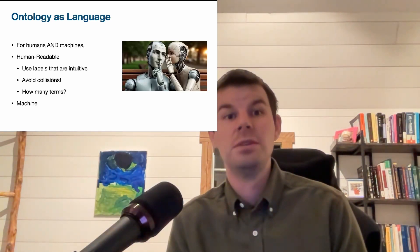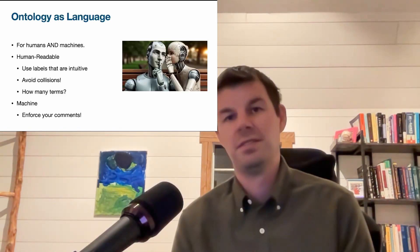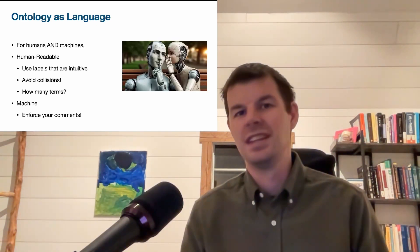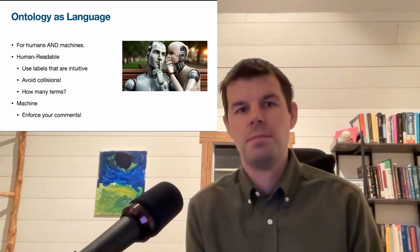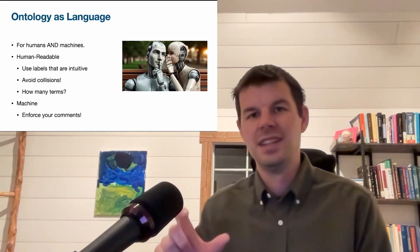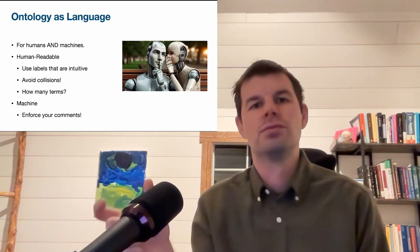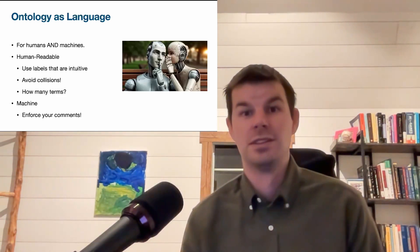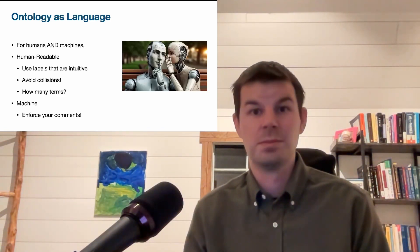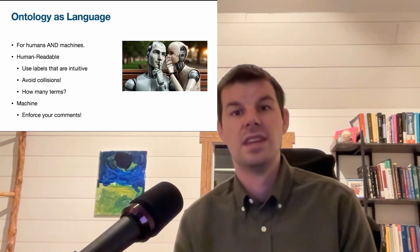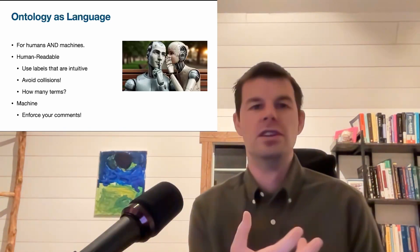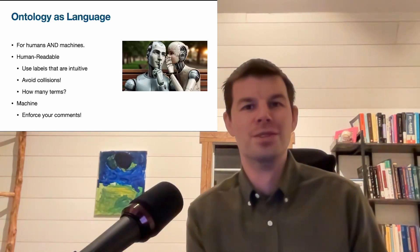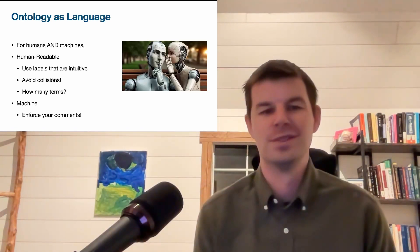Our language also needs to be machine-readable, and the biggest way that this manifests itself is people make a new term, and they write a comment, and they say, this is what I mean by that term. But from the computer's perspective, they now just have a comment that sits next to it. The computer can't parse or read or understand that comment, and so you need to make sure you enforce that comment. If I say that foxes are a specific type of vertebrate, then I better make sure that I have a node for fox and a node for vertebrate, and I've connected those in the right sorts of ways.